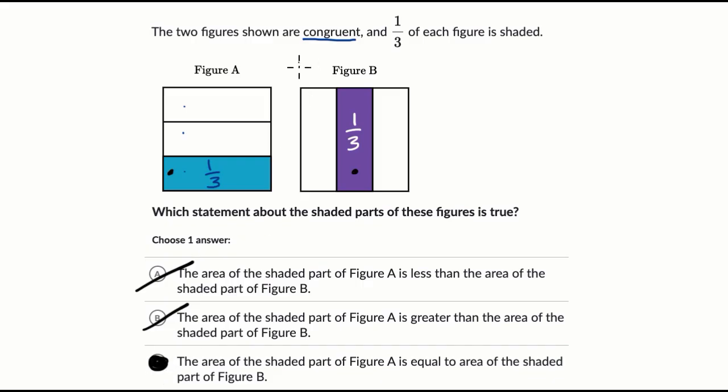Now, to be clear, if they didn't tell us that these two figures are congruent, if I just said I had two different figures and one-third of each of them is shaded, it would actually be